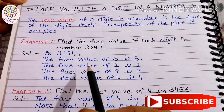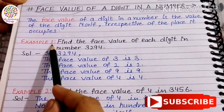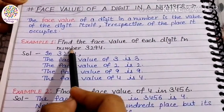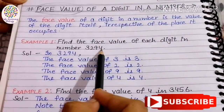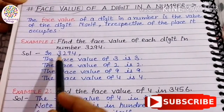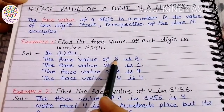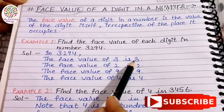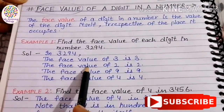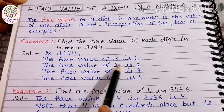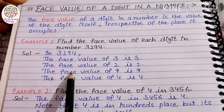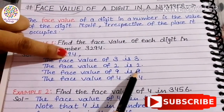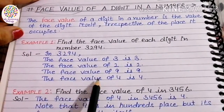Let's understand with a question: find the face value of each digit in the number 3294. In this number, the face value of 3 is 3 itself. The face value of 2 is 2 itself. The face value of 9 is 9 itself.